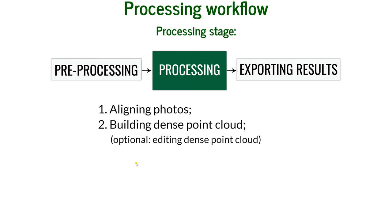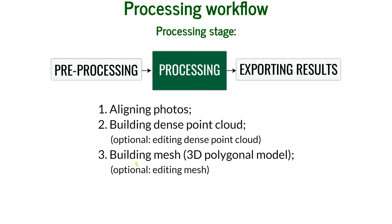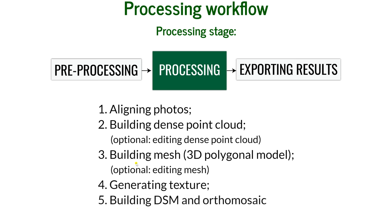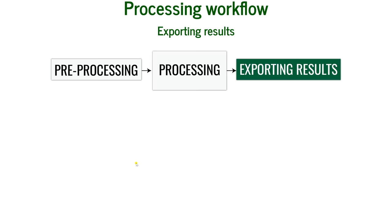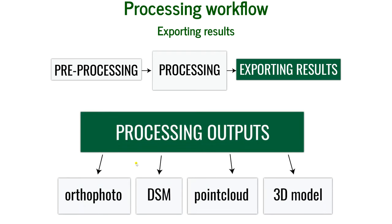Processing consists of multiple steps: the first is aligning photos, the second is building a dense point cloud which you can also edit, then building a mesh (the polygonal model) which can also be edited, then generating the texture, and finally building the DSM and orthomosaic — five basic steps in total. For exporting results, you can export in multiple formats including orthophoto, DSM, point cloud, and 3D models for use in other software packages.